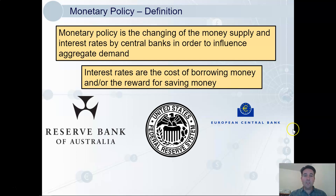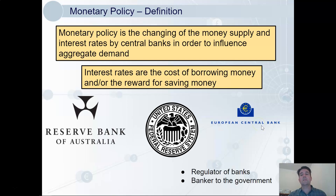Now, in addition to implementing monetary policy, a couple of other things central banks do is that they're the regulator of the commercial banks, so they set the rules, and they're also the banker to the government.